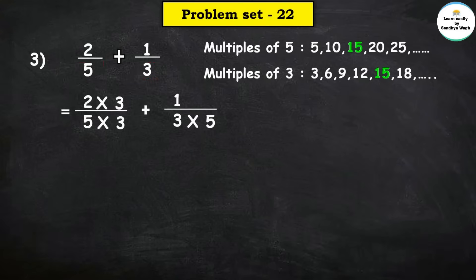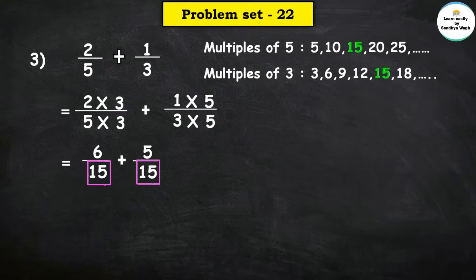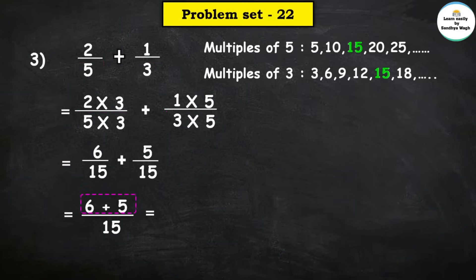Numerator 1 is also multiplied by 5. So we get: 2 times 3 = 6, denominator 5 times 3 = 15. Plus 1 times 5 = 5, denominator 3 times 5 = 15. Both fractions are now converted to like fractions. Common denominator is 15. Numerator addition: 6 plus 5 is equal to 11, denominator 15.